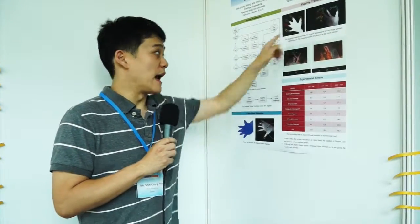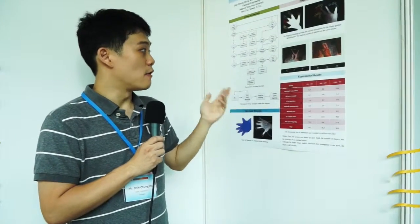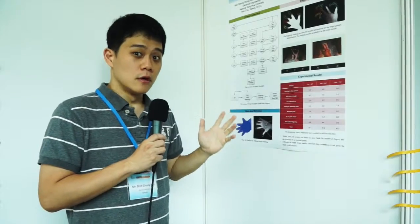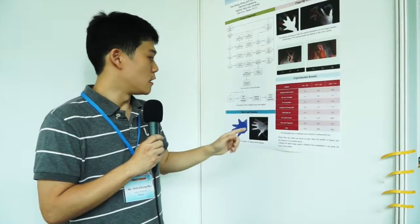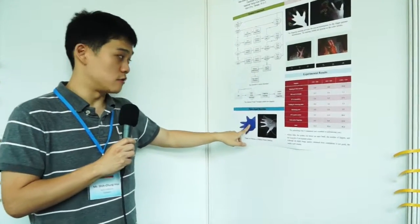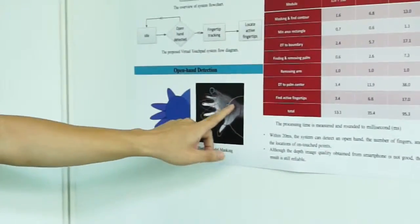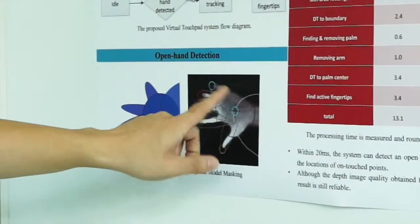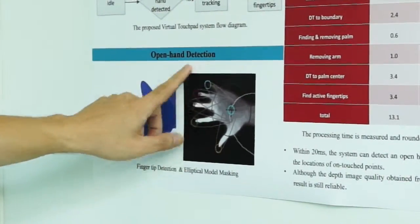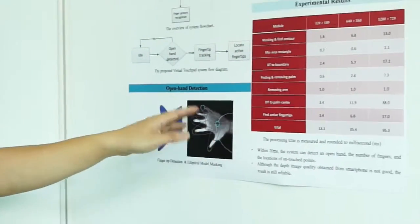After we get the position of the hand, we need to detect open hand at the initial stage. Here is our open hand ellipse model—we use this model to fit on the foreground and decide if the foreground is open hand or not. After we detect the open hand, we do fingertip tracking.